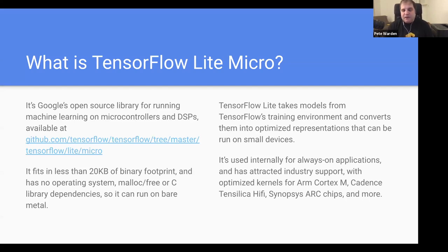TF Lite Micro is our way at Google of taking models trained up in the cloud and getting them running on microcontrollers and DSPs. The name 'micro' is a little bit misleading — we're doing a lot of work with Cadence on their DSPs. Really what we've aimed at is something incredibly portable that will run in less than 20K, doesn't rely on an operating system, memory allocation, or even C library dependencies. We're able to do this because fundamentally running your networks is just doing math — as long as we have the libm math library on a device, we can run happily on bare metal.